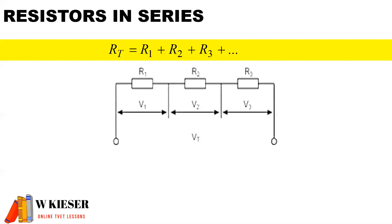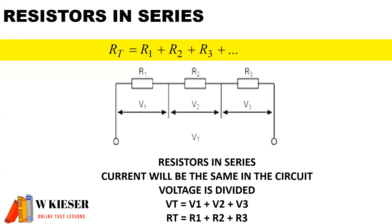If we have a look at the circuit diagram, to calculate the total resistance it's R1 plus R2 plus R3. Current remains the same; however, voltage is divided, therefore the sum of the volt drops is equal to the total voltage.